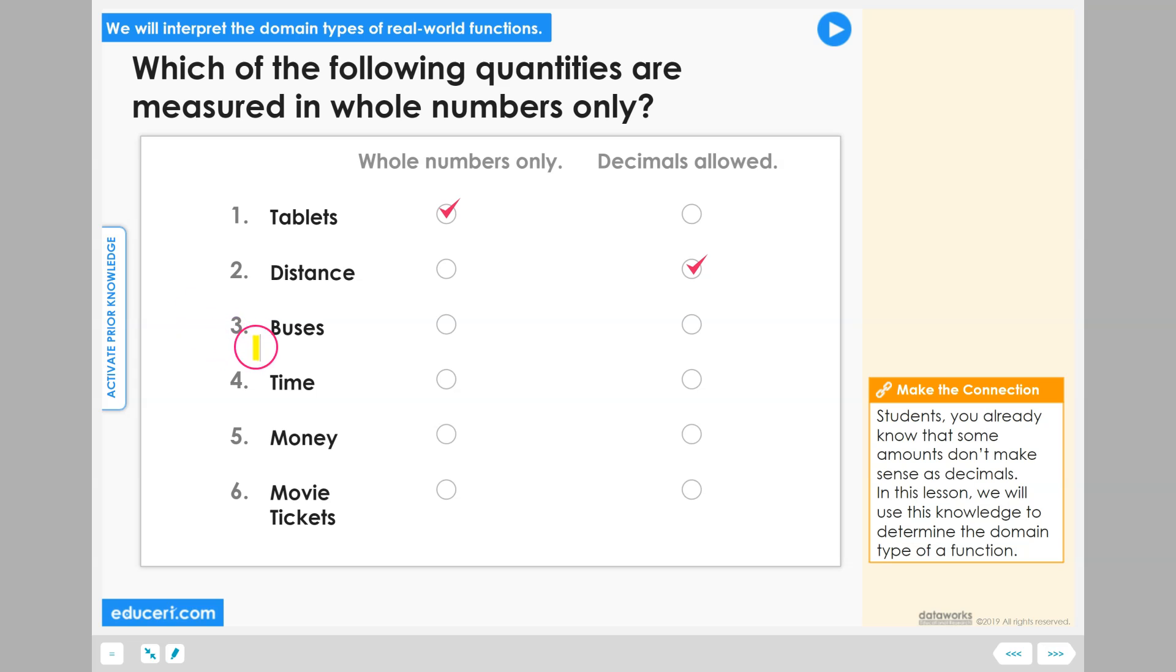Let's check your answers. Number three, buses. You can have one bus, two buses, three buses, but you would never have one-and-a-half buses. Half a bus would not be very useful for going on a field trip.